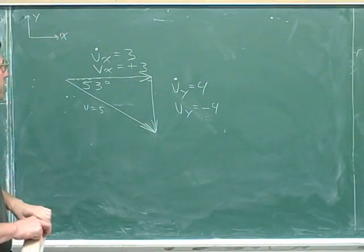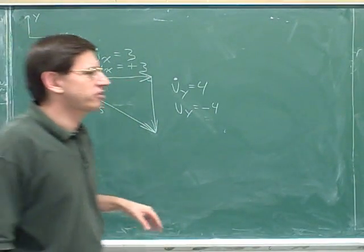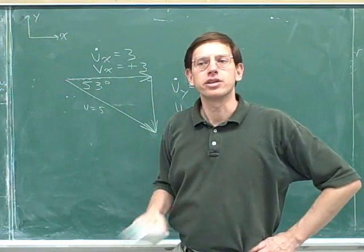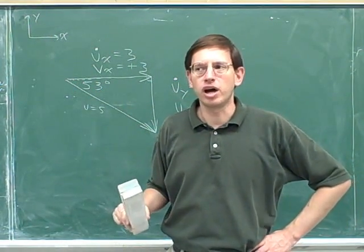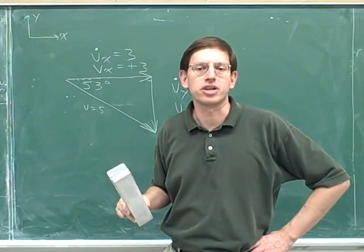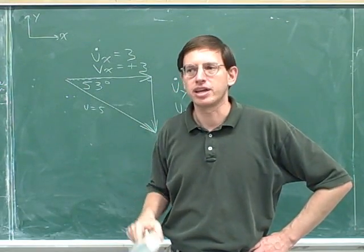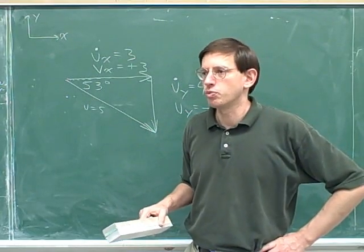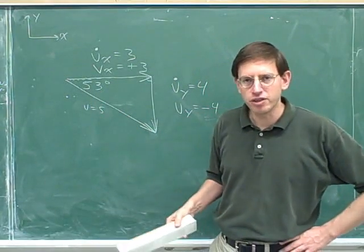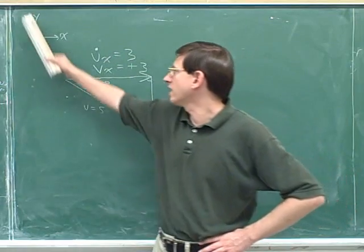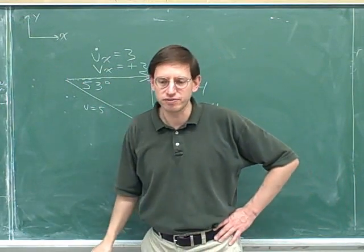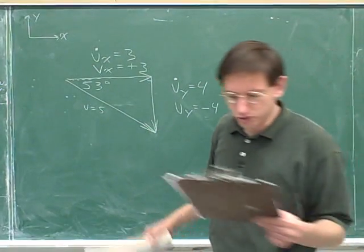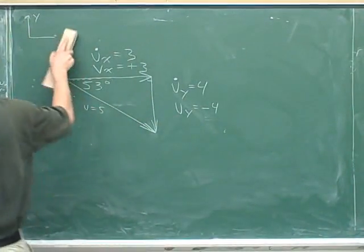Let's keep working on this overall vector. One thing that maybe I haven't made clear enough is that you choose the axes. You can choose any axes you want as long as they're perpendicular to each other. You can also choose what your positive directions are. For all the problems we've done so far, we've chosen up and to the right as positive. But now I'd like to choose down and to the right as positive.